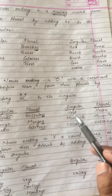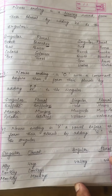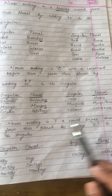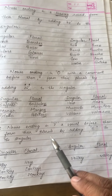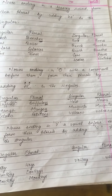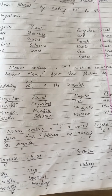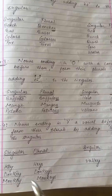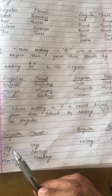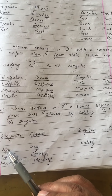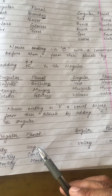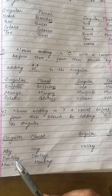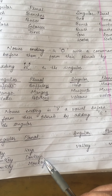Rule number four: nouns ending in 'y' where a vowel comes before the 'y' form their plurals by adding 's' to the singular. For example, key ends with 'y' and before 'y' there is a vowel 'e', so we add 's' — keys. Donkey similarly becomes donkeys, monkey becomes monkeys, valley becomes valleys.